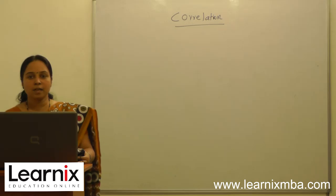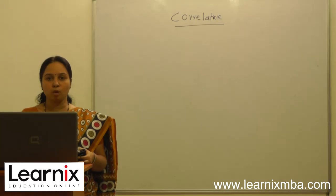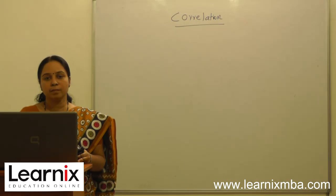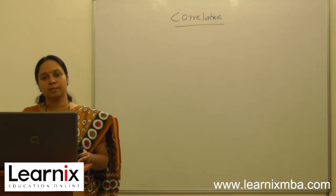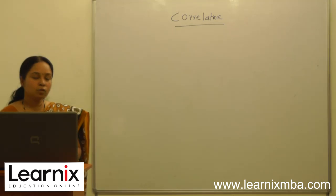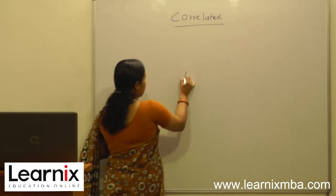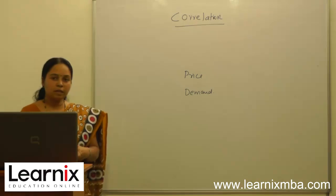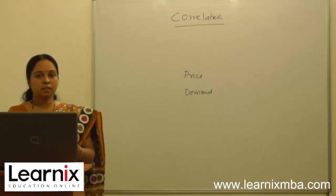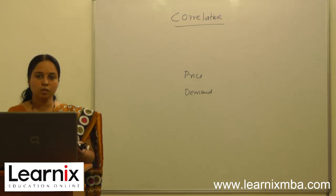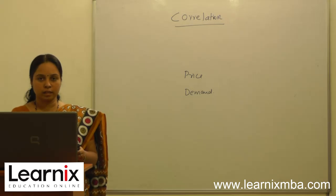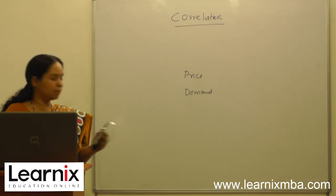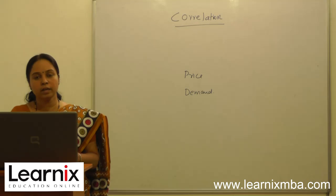Correlation analysis is defined as the degree of relationship between two or more variables. Two variables are said to be correlated if the change in one variable results in a corresponding change in the other. For example, if we consider price and demand of an item — if there is an increase in price and a corresponding increase in demand, the two variables are correlated. Similarly, if an increase in price results in a decrease in demand, the variables are also said to be correlated.